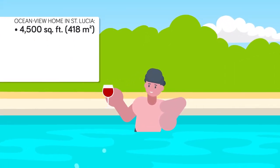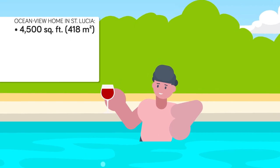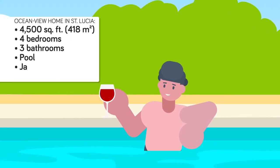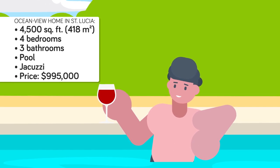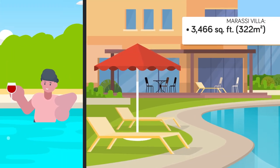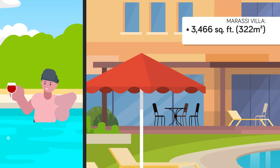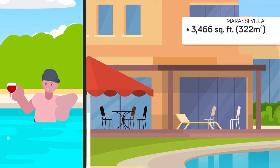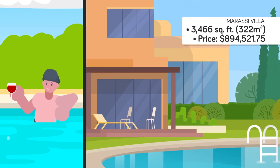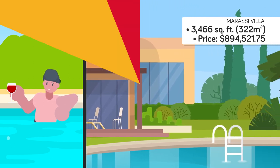He thinks about how he'd be better off buying a 4,500 square foot ocean view home in St. Lucia with 4 bedrooms, 3 bathrooms, a pool, and jacuzzi for $995,000. Or a 3,466 square foot Marasi villa with a view of the Nile and the Mediterranean Sea on Egypt's north coast for $894,521.75.